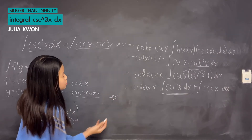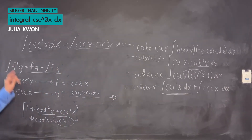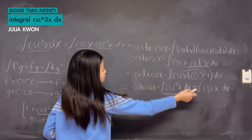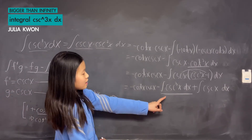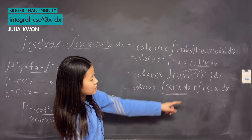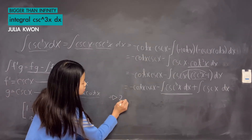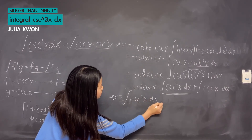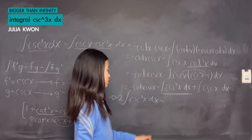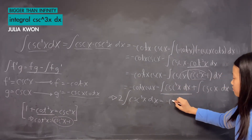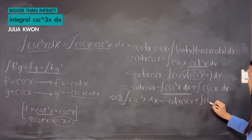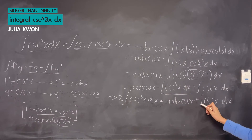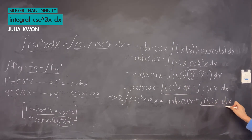What we can do is say that the integral of cosecant cubed x dx equals what we have here, and add the integral of cosecant cubed x dx to both sides. That gives us 2 times the integral of cosecant cubed x dx equals the rest of the terms. We can then divide both sides by 2, but first I'll solve for the integral of cosecant x dx.